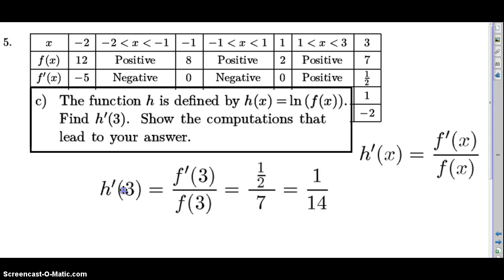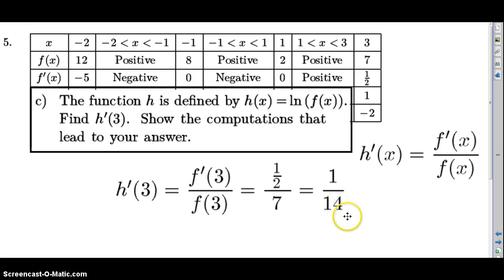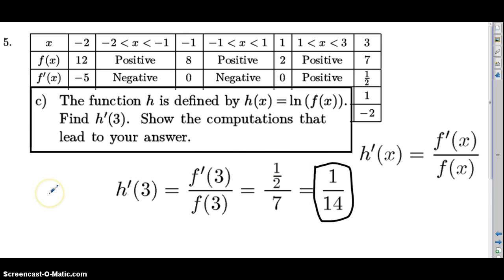So h prime of three specifically equals f prime of three divided by f of three. Looking in the table, f prime of three is one half, and f of three is seven. So one half divided by seven gives us one over fourteen as our final answer. That concludes part C.